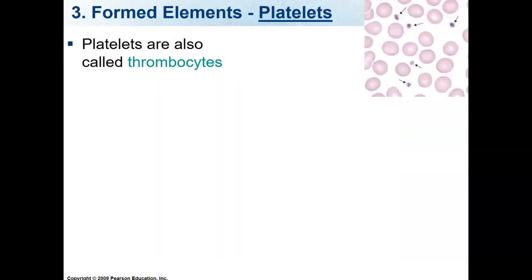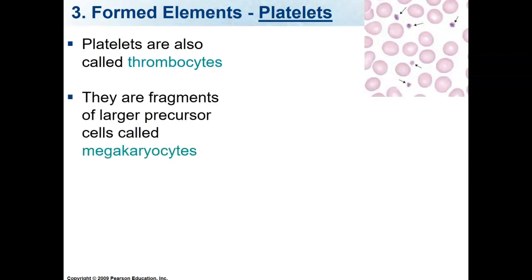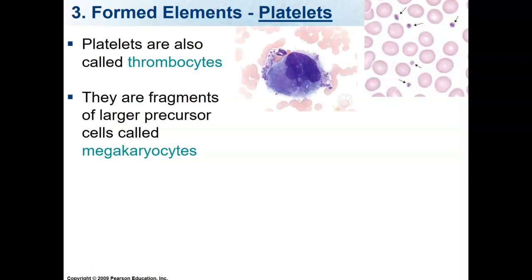Thrombocytes are also called platelets. Platelets are really just fragments of cells. You can see in the picture here, they're very tiny — less than half the size of a normal red blood cell. They are fragments of cells called megakaryocytes.